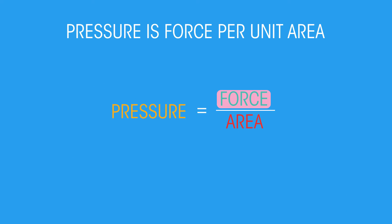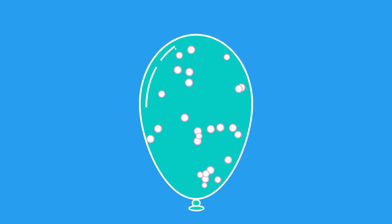We also see the effect of pressure in gases when we blow a balloon up too much and it pops. This is because we've increased the pressure of the air molecules pushing against the rubber balloon too much.